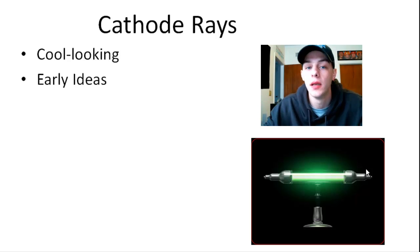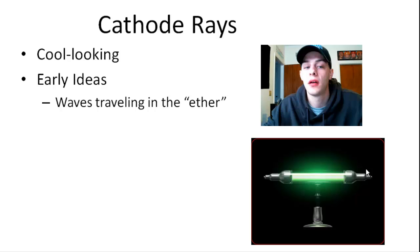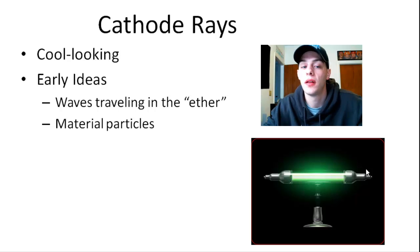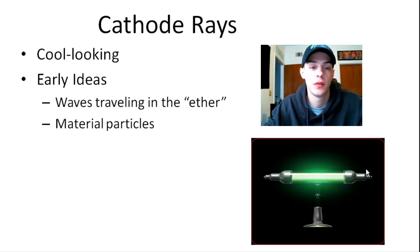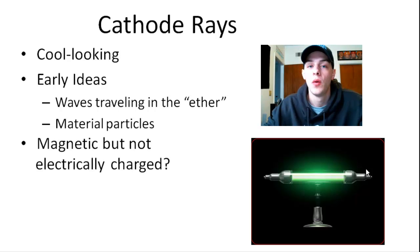So some of the early ideas about cathode rays—there were a lot of conflicting ideas about what these cathode rays were. A lot of scientists thought that they were actually waves that were traveling in a hypothetical fluid which they called the ether. And other scientists were convinced that these were actually material particles and that they weren't waves. So there were a lot of conflicting ideas. And one of the things that puzzled many scientists was that they were influenced by a magnetic field.